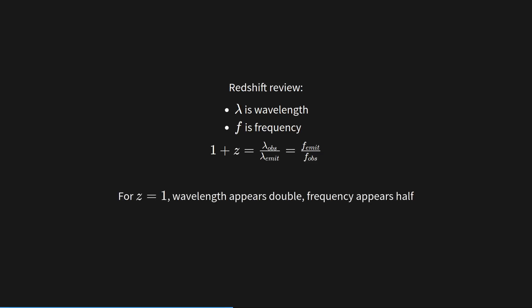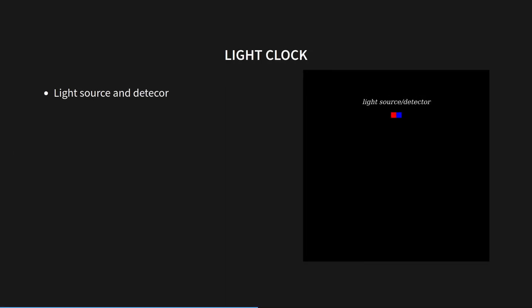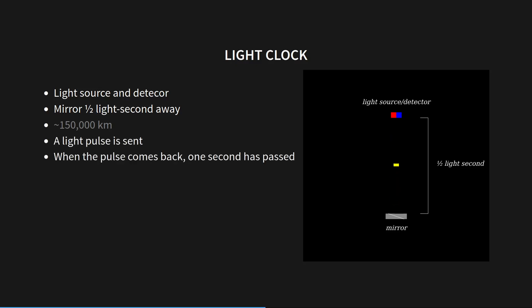For a Z equals 1, its wavelength appears double and frequency appears half. So let's put a light clock at Z equals 1. What's a light clock? Well, imagine a light source and detector in a mirror about a half light second away. Light should take one second to travel in between. And then it can just repeat.